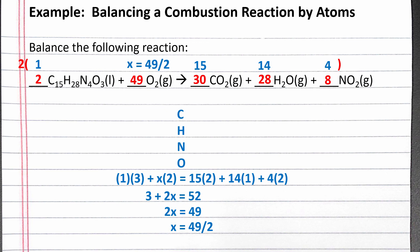To double check that we've balanced the reaction correctly, we should count up the number of atoms of each element on both sides to make sure it matches. With our new coefficients, we now have 30 carbon, 56 hydrogen, 8 nitrogen, and 104 oxygen on each side. This should be our correctly balanced chemical reaction.